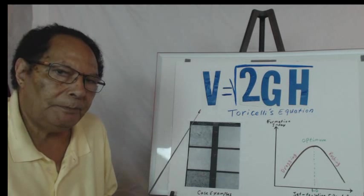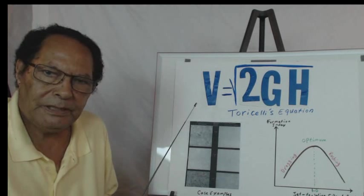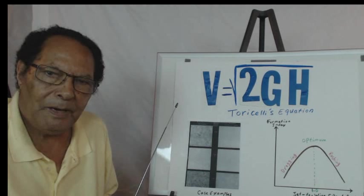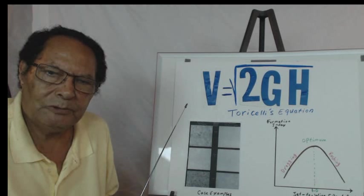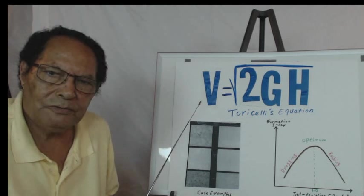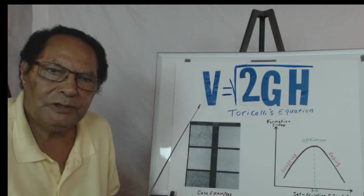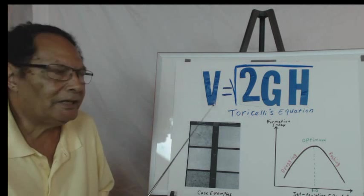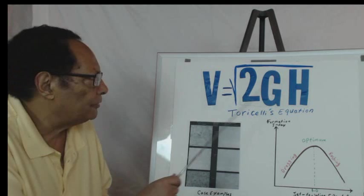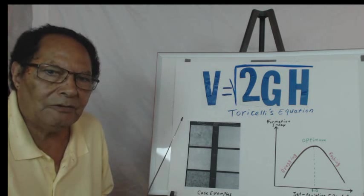Torricelli was the student of the great Galileo in 1642. People put a pump in a deep well and the pump was not able to pump, so Galileo sent Torricelli to investigate and he came up with that equation which is fundamentally correct.